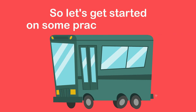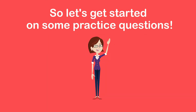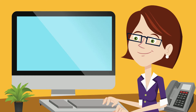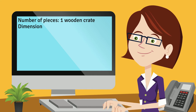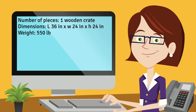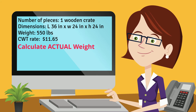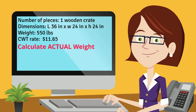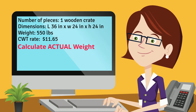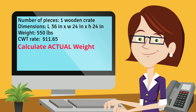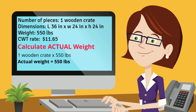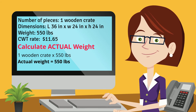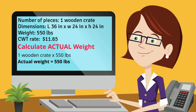Let's get started on some practice questions. You have a shipment that is one wooden crate. The dimensions are 36 by 24 by 24 inches. The weight is 550 pounds. The CWT rate is $11.65. To calculate the actual weight, we take the one piece and multiply it by 550 pounds, giving us an actual weight of 550 pounds.